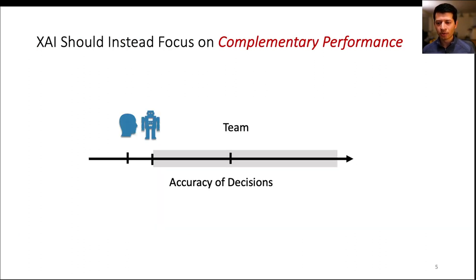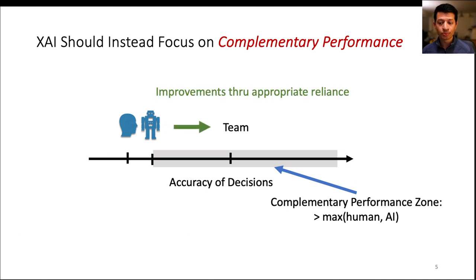As a way forward in our paper, we propose that research on explainable AI should instead focus on achieving complementary performance, that is, a level of performance that is greater than what solo users or AI can achieve, as indicated by the gray region on the horizontal axis. Such gains are only possible if the explanations improve appropriate reliance.